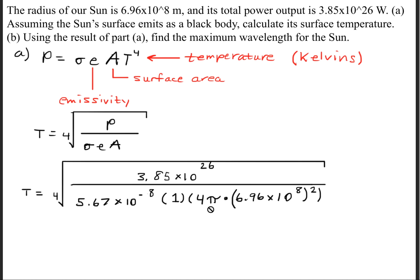the surface area will have 4π times the radius. We're told the radius of the sun is 6.96 times 10 to the 8th, and don't forget that you have to square the radius. This will give us a temperature of 5,779.86 kelvins.